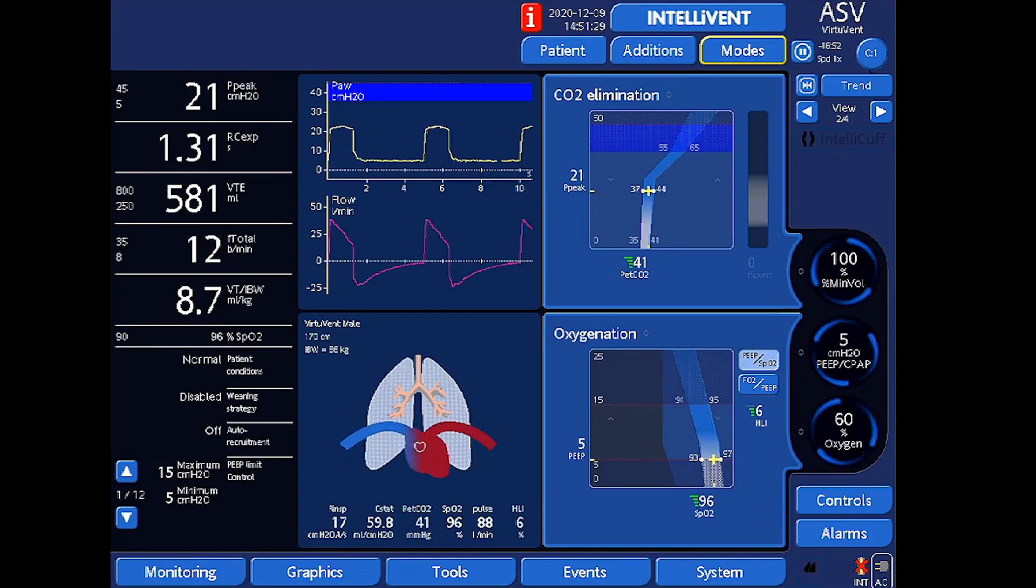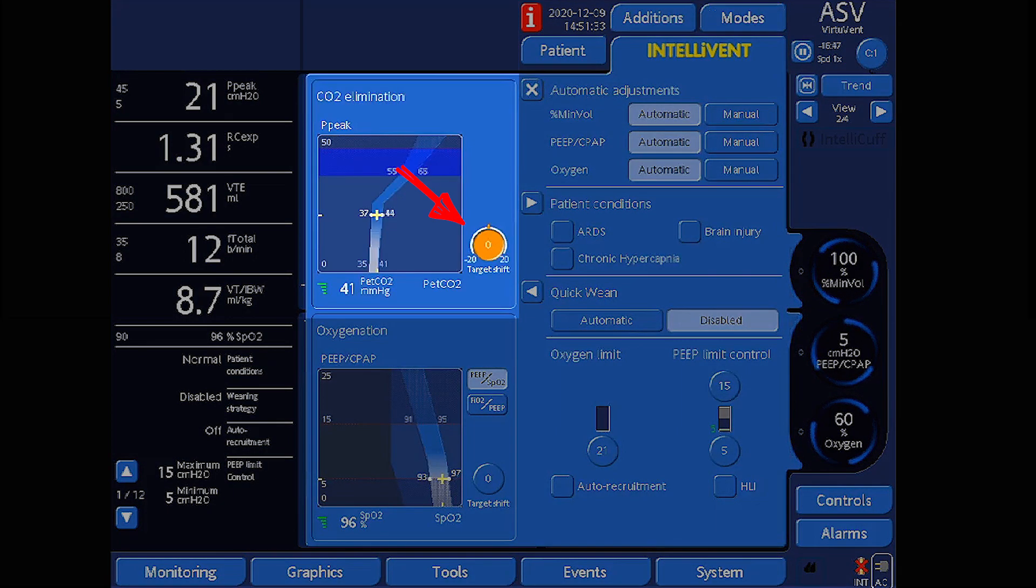To do this, open the IntelliVent ASV settings window and select the target shift control in the CO2 elimination window. You can adjust the PET CO2 target range to the left for lower values or to the right for higher values within the defined limits. In this case, we want to reduce it by 10 mmHg to achieve the desired PaCO2 goal.